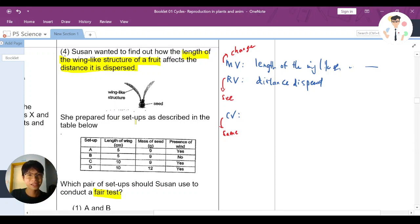So now let's look at here. She prepared four setups as described in the table below. So I have A, B, C, D. I have the length of the wing, mass of the seed, and presence of wind. Now, since we are talking about the length of the wing structure and how the distance dispersed, so wing is something we must have. For sure, right? Because if we don't have wing, then why do we need to have this experiment? So we actually can cut down B already.